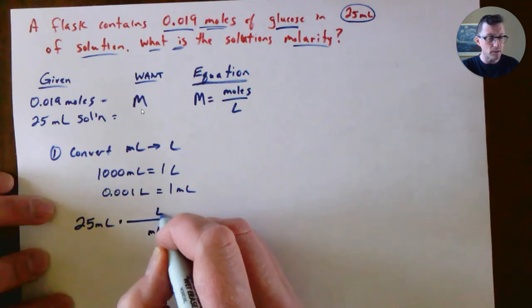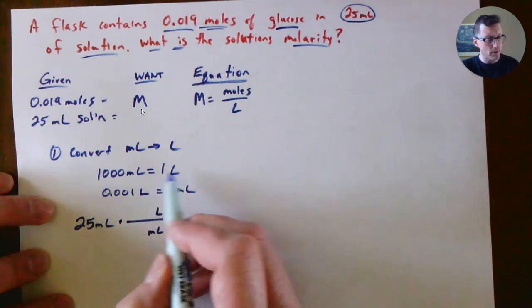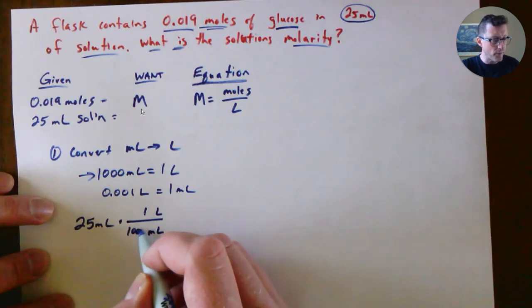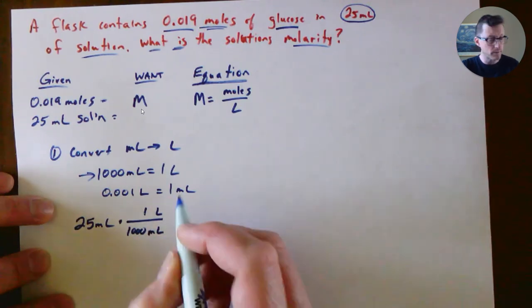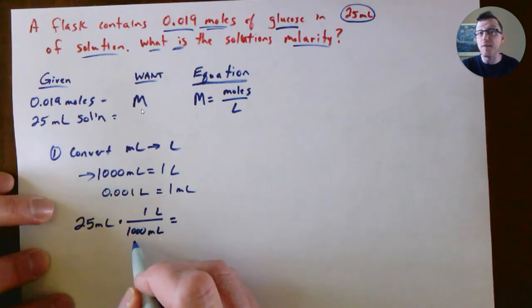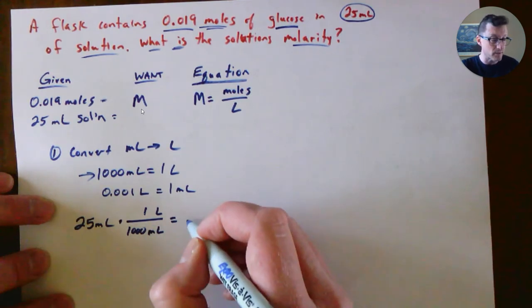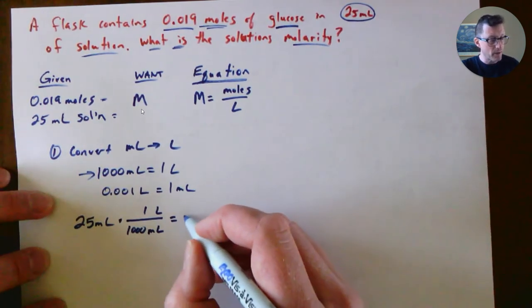Liters is going to be on top, and we use one liter equals a thousand milliliters. Math-wise, that's 25 divided by 1000. A thousand means you're just moving the decimal point three places smaller because you're dividing, so you get 0.025 liters.